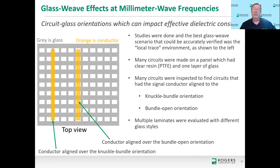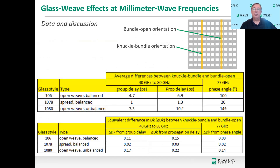As part of the study, we tested multiple laminates using different glass styles — all PTFE and glass only, just different glass types — looking for differences in the glass weave effect. Here's a summary: the table shows differences between circuits oriented to the knuckle-bundle orientation versus the bundle-open orientation using the same laminate. This study had four different laminates; the table shows three of them. The glass styles are 106 (open weave), 1078 (spread weave), and 1080 (open weave).